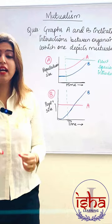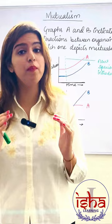I hope you got to the right answer. Mutualism is an interaction between two organisms where both should benefit. So population size dono ka hi increase hona chahiye.